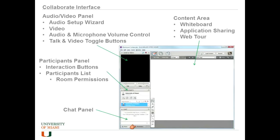In the content area we have the whiteboard, the application sharing, and the web tour features. We also have the load content button and the record button. That record button is a toggle — you click it once to start the recording and click it again to stop it.